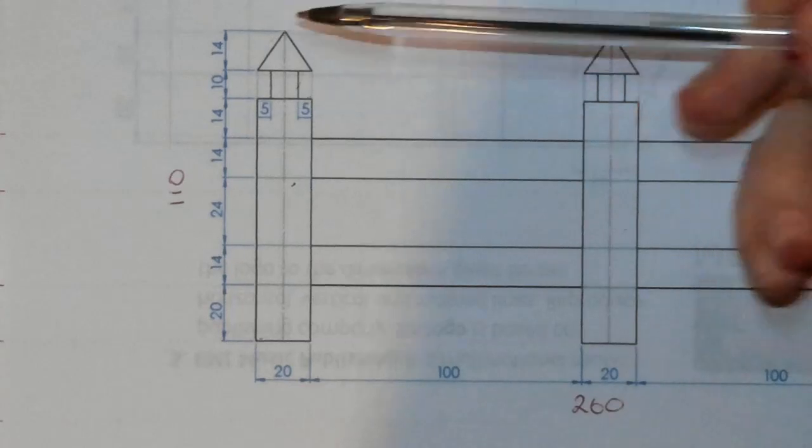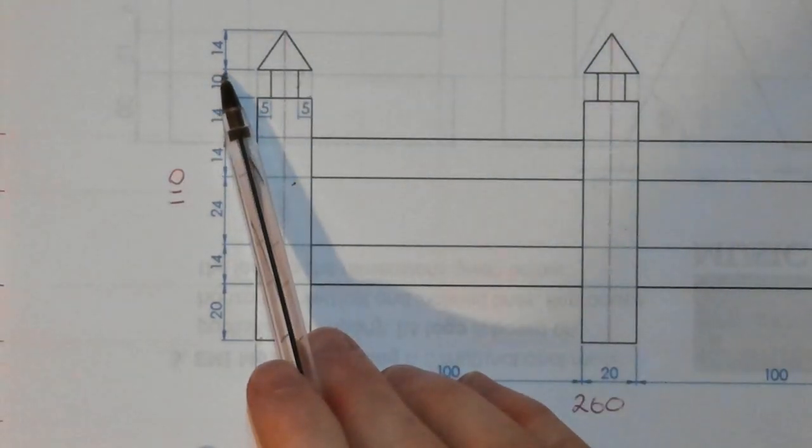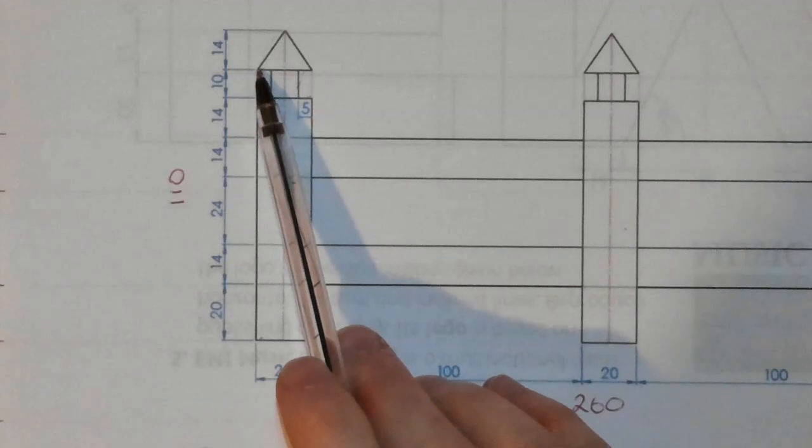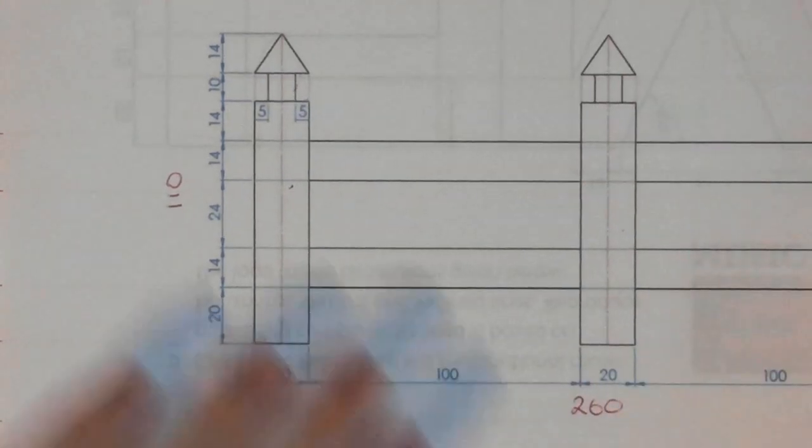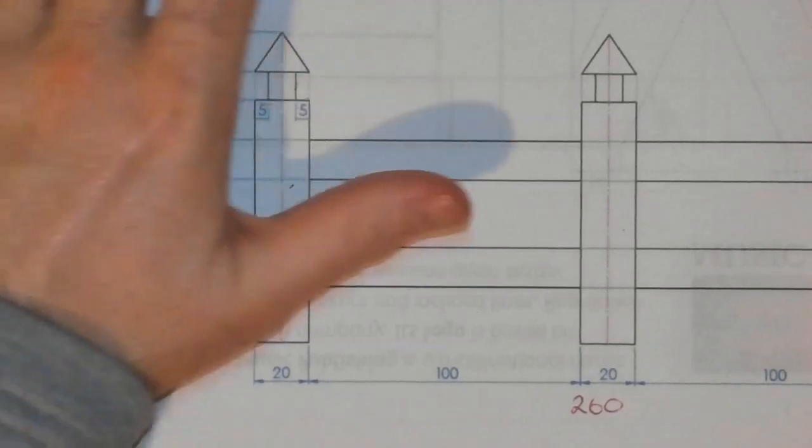What's also important to note is at our 10 millimeter mark, that line going across gives us the points on the triangles here, here, here, and here. So I'll start putting in that information now as well.